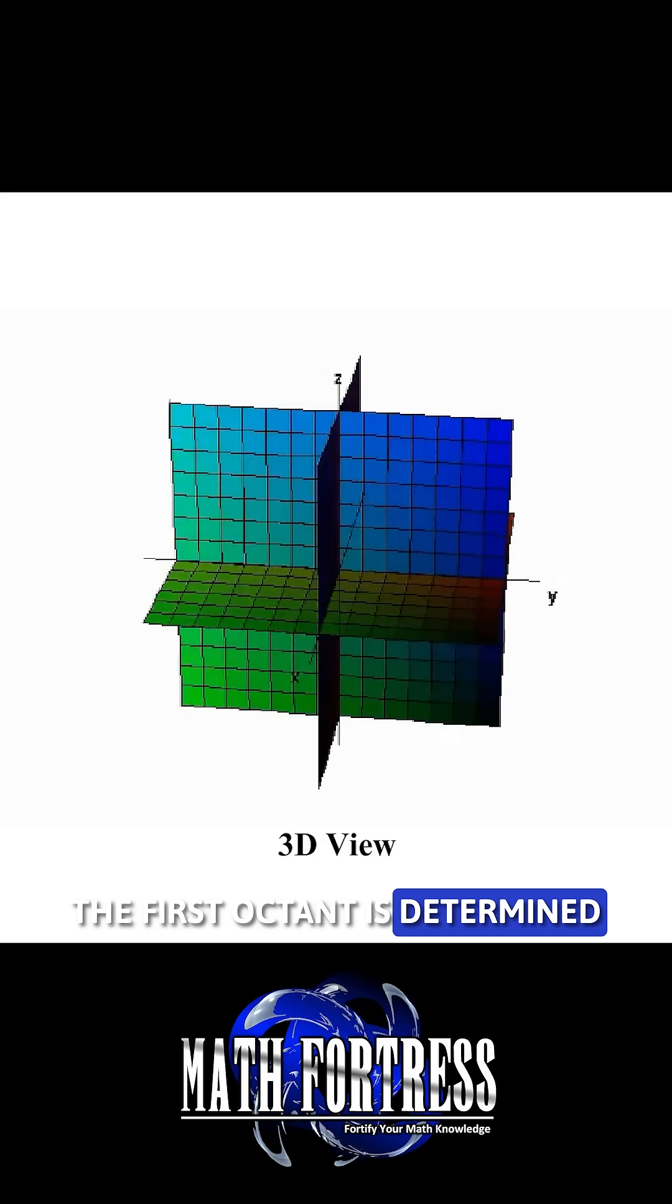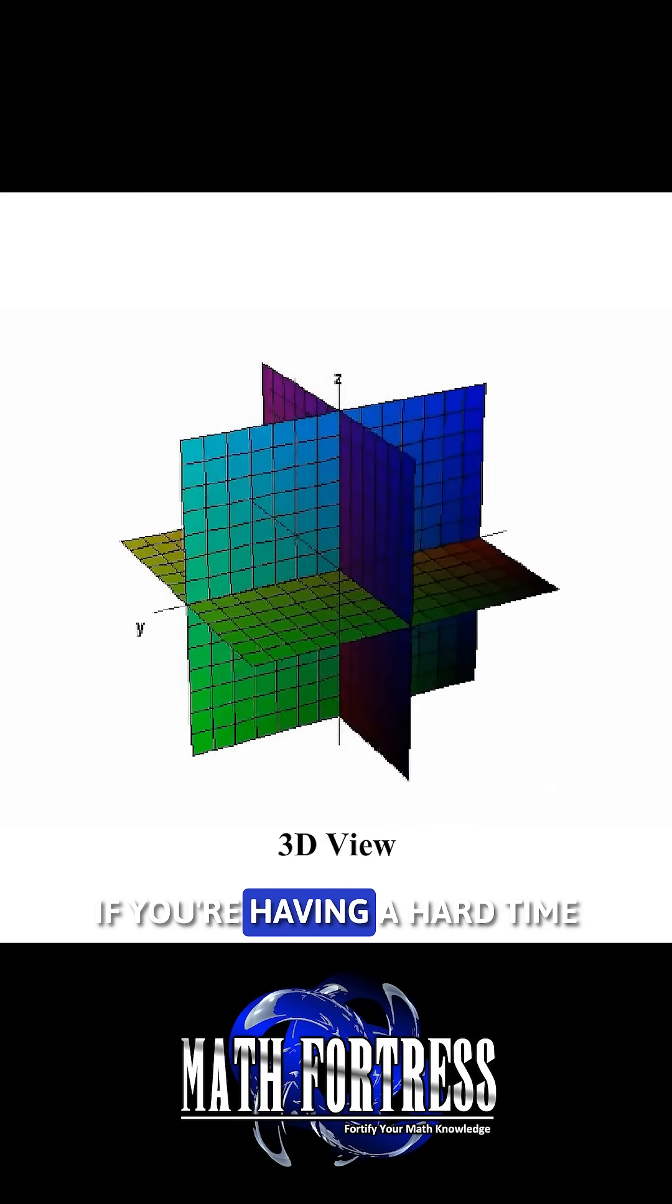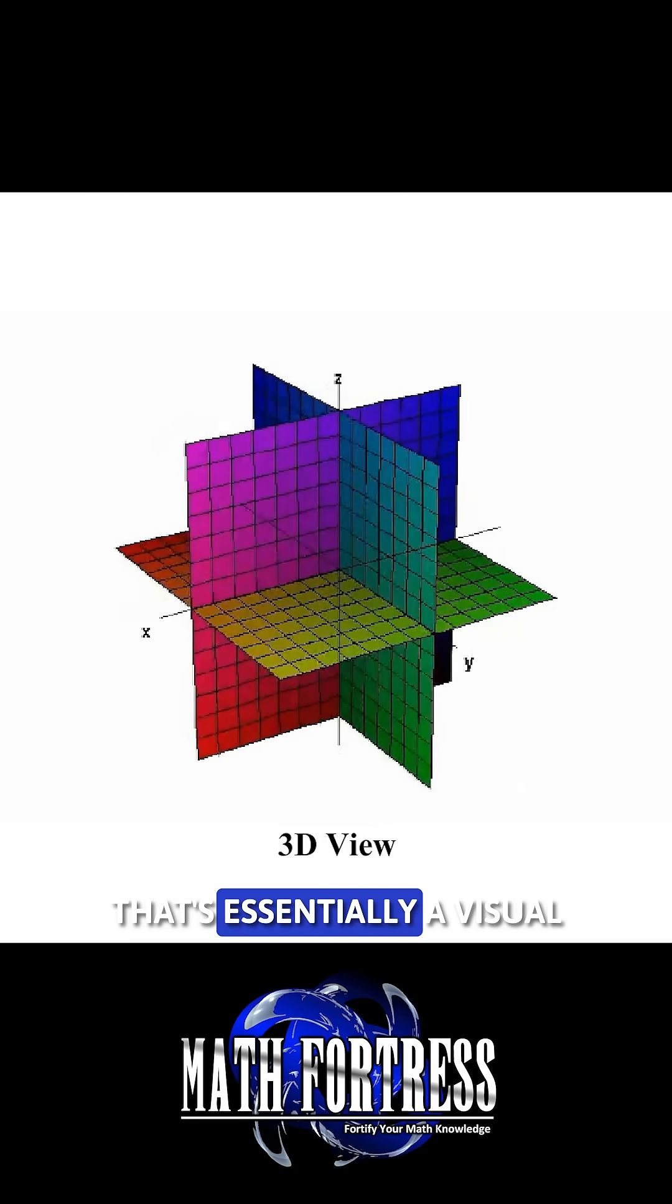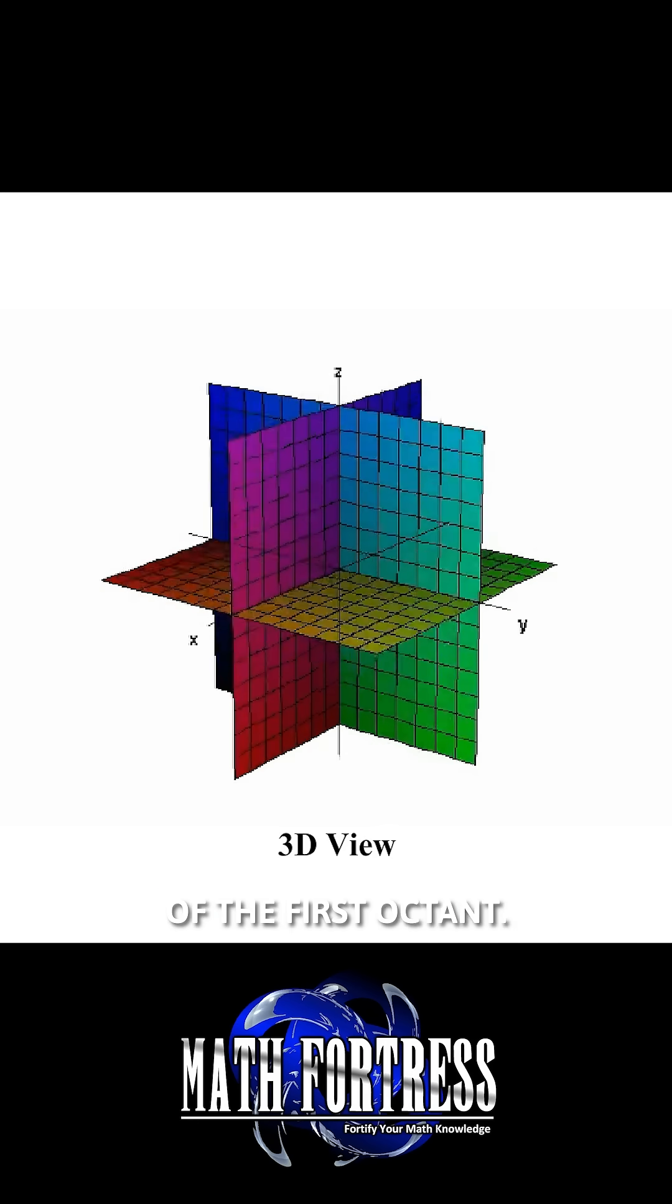The first octant is determined by the positive axis. If you are having a hard time visualizing this, just look at any bottom corner of a room. That's essentially a visual representation of the first octant.